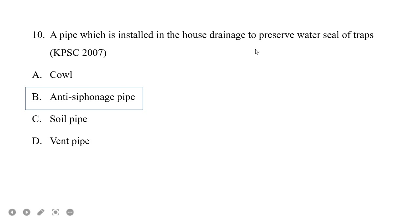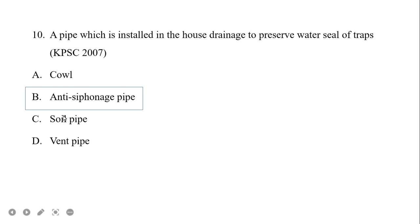A pipe which is installed in house drainage to preserve the water seal of traps is called an anti-siphonage pipe. We will discuss this in detail in the next class under Public Health Engineering, covering the KWA syllabus update. The ventilation pipe is used to protect the soil pipe.